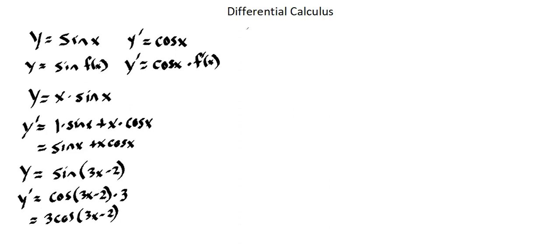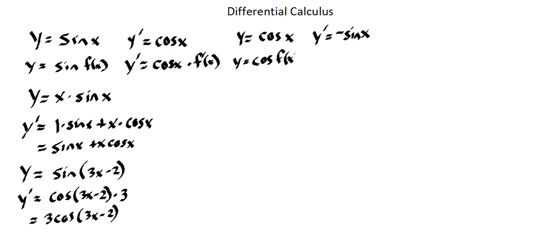Let's consider cosine. If our function y equals cosine of x, then our derivative equals negative sine of x. If our function is cosine of a more involved function — cosine of f(x) — then the derivative is negative sine of f(x) times the derivative of f(x).